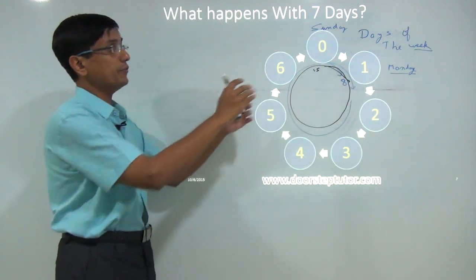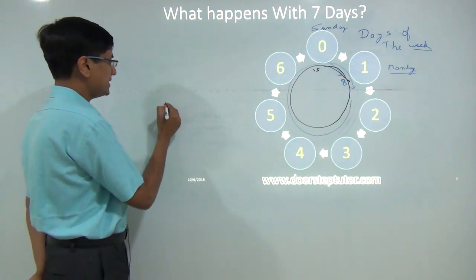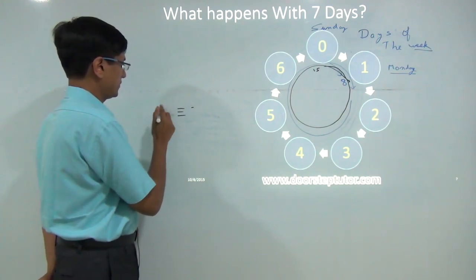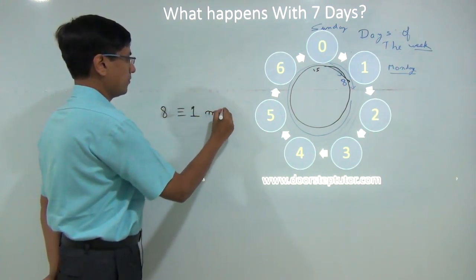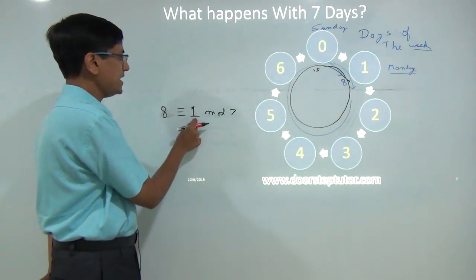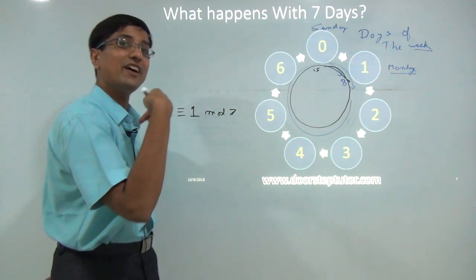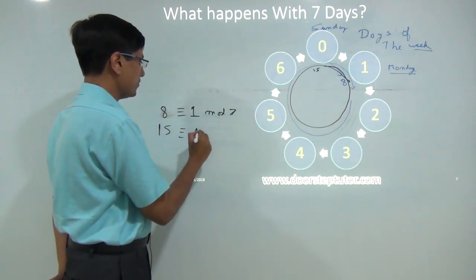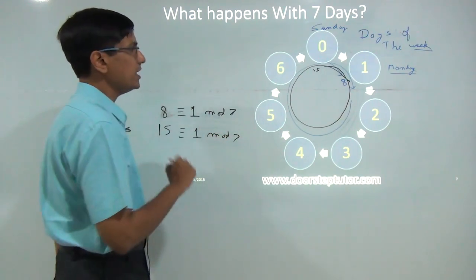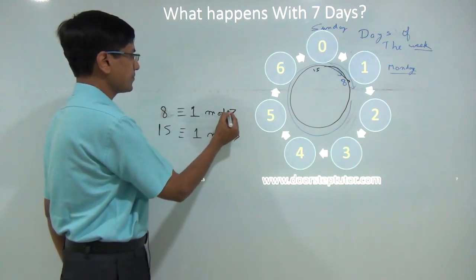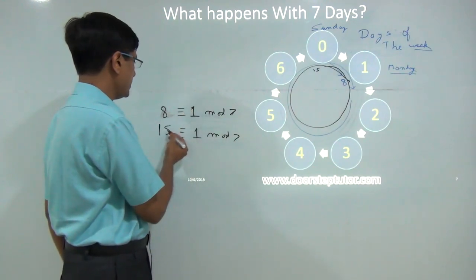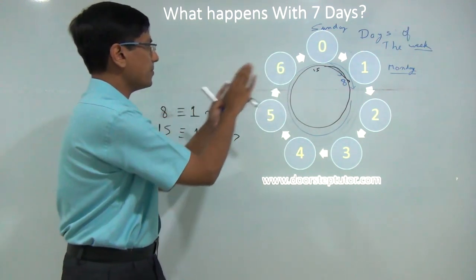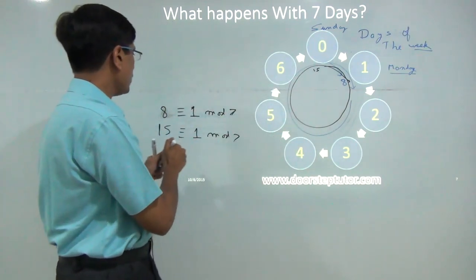In this days-of-the-week world, 8 is congruent to 1 mod 7. If I go forward 8 days, I am essentially moving only 1 day in the days-of-the-week cycle. Similarly, 15 is congruent to 1 mod 7. The key point is that 8 divided by 7 gives a remainder of 1, and 15 divided by 7 also gives a remainder of 1. That is why moving forward by 1, 8, or 15 are exactly equivalent — they are congruent.